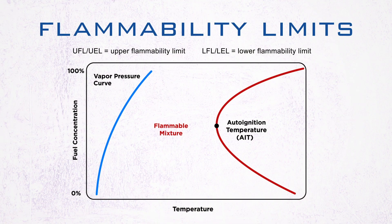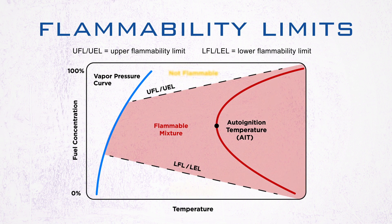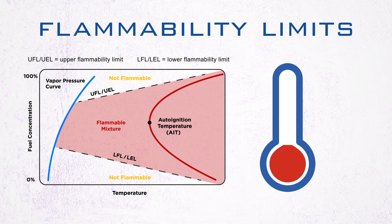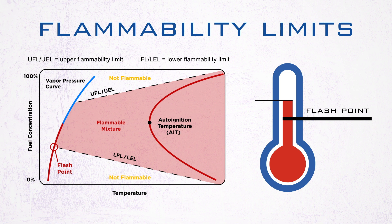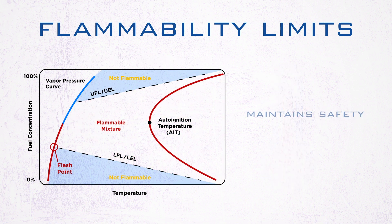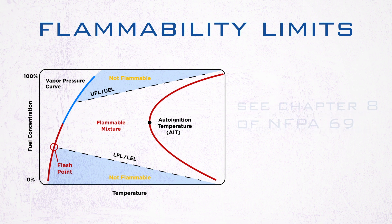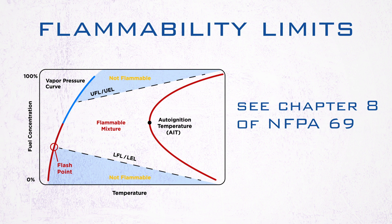Flammability limits: you've got your LFL and your UFL. The flammable region begins and ends between the two. In order to conduct an LFL test, the chemical must have a flashpoint and the temperature of the testing environment must be above it. Knowing these limits is valuable because operating close to, but outside of them, maintains safety while also potentially keeping product yields high. Chapter 8 of NFPA 69 advises the permissible safety margin necessary when operating near the flammability limits.